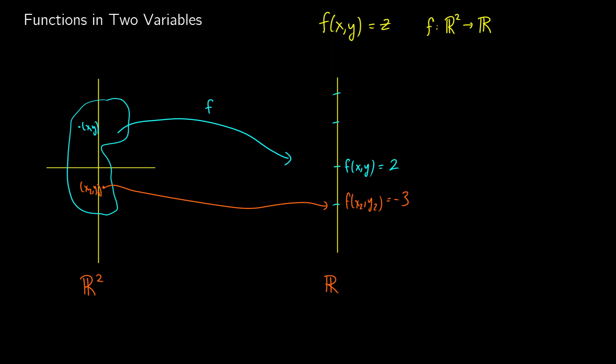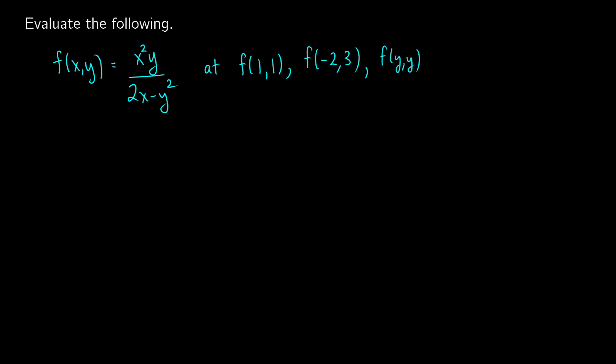So that's what our functions are going to look like. Let's practice evaluating a function — and it's no different than how you regularly evaluate functions. Let's say f of x y equals x squared times y over 2x minus y squared. We want to evaluate it at f of 1 1, f of negative 2 3, and f of y y. For f of 1 1, we just plug 1 into x and 1 into y.